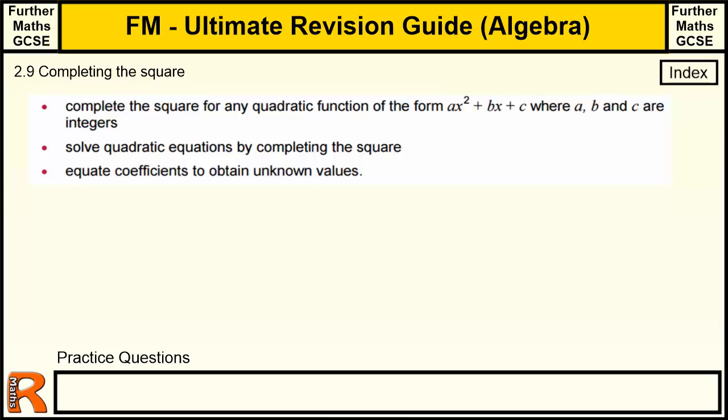2.9, completing the square. This is part of the ultimate revision guide for Further Maths GCSE. This is the algebra section. We have an index button at the top here that will take you back to the index for algebra, and then there's an index that can take you back to the index for the whole of the revision guide.